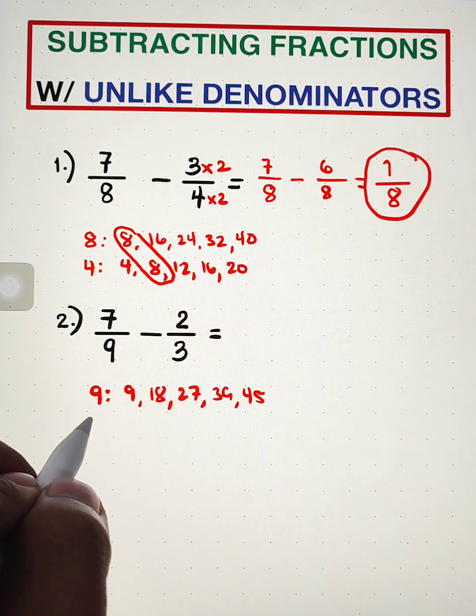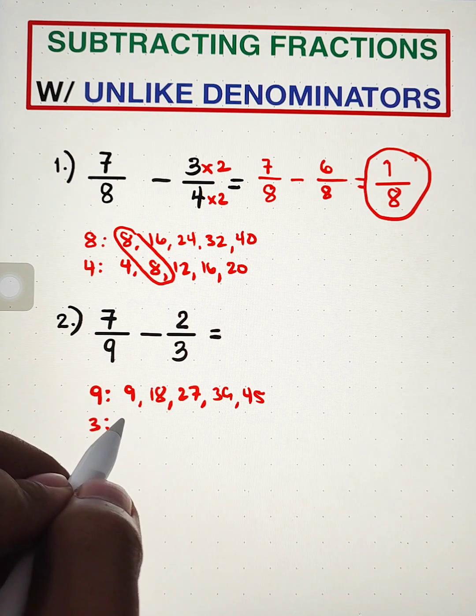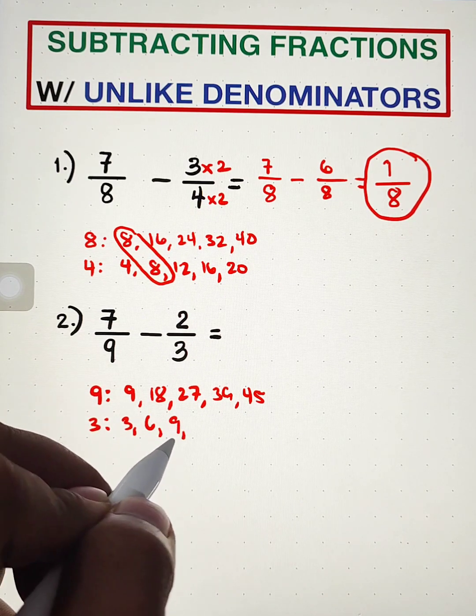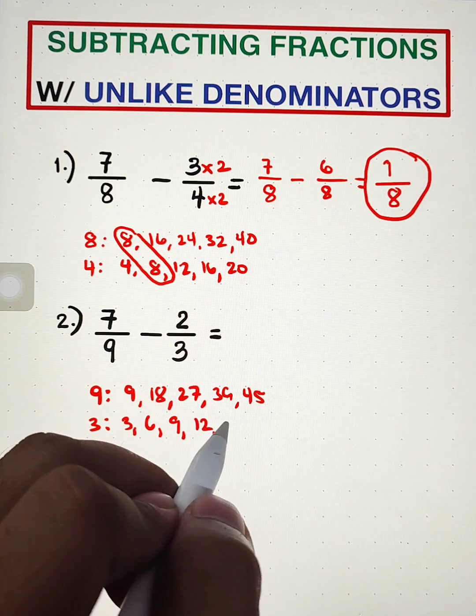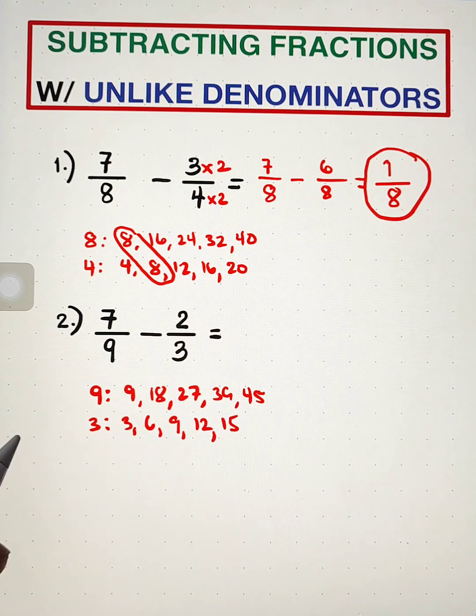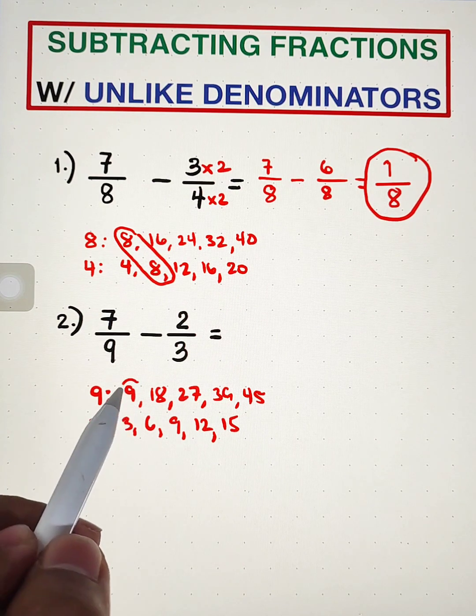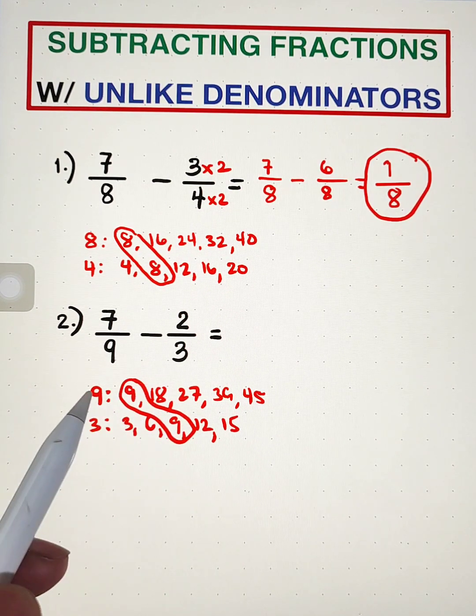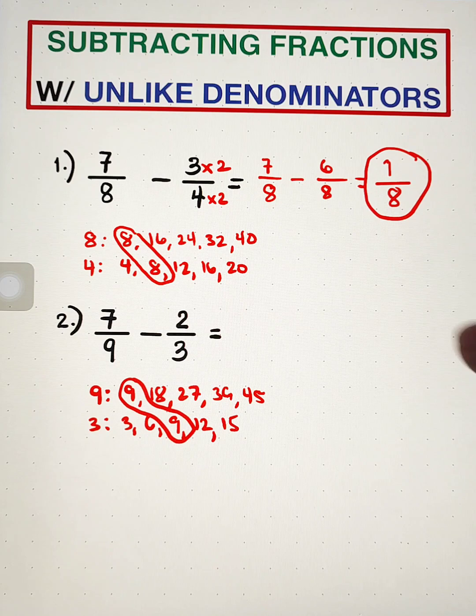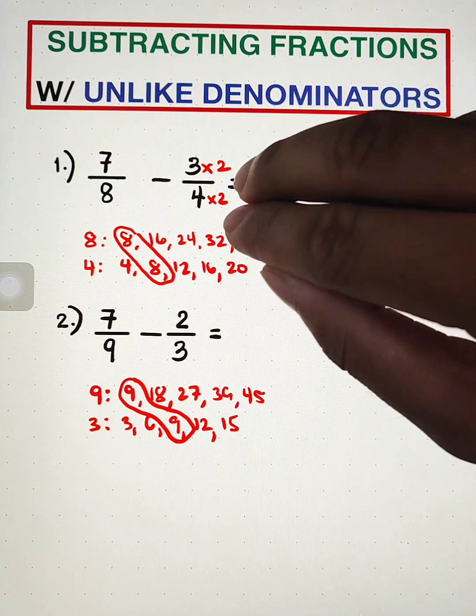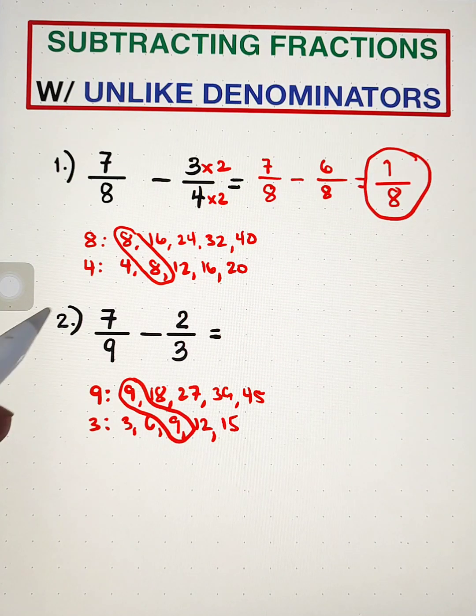And for the 3, the multiples are 3, 6, 9, 12, 15. And apparently guys, we have an LCM which is 9. So here, if we think of what to multiply here, this is our method.